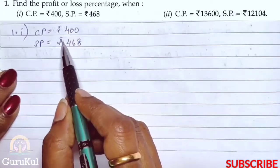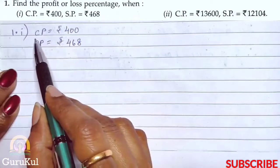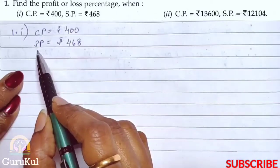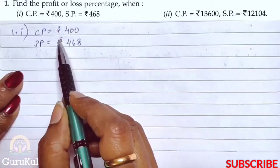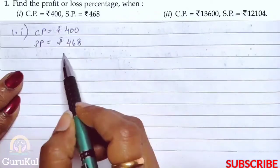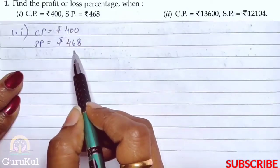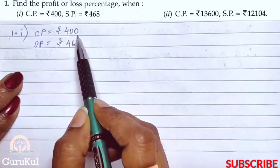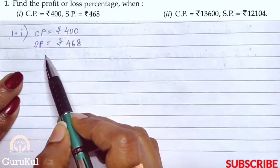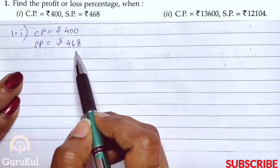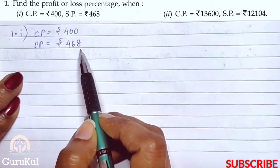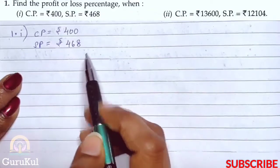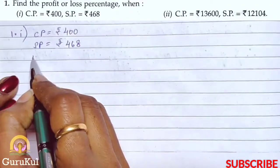If we buy some item, that is called the cost price, and SP is the selling price — the rate at which we sell that item. As you can see clearly, the cost price is Rs. 400 and selling price is Rs. 468. Since SP is greater than CP, that means we have made a profit.